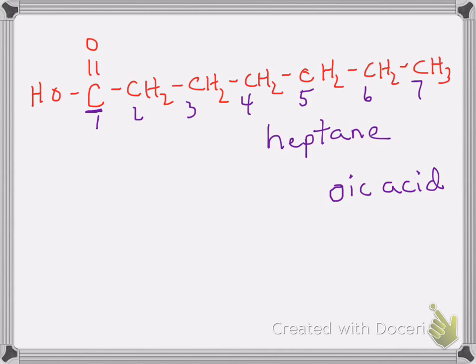Seven carbons means this is a heptane derivative. For the parent name when you name a carboxylic acid using systematic nomenclature, you drop the 'e' and add 'oic acid,' giving us heptanoic acid. There are no substituents hanging on any of the carbons, so our name is complete — the name of this molecule is heptanoic acid.